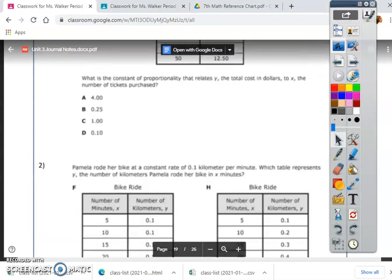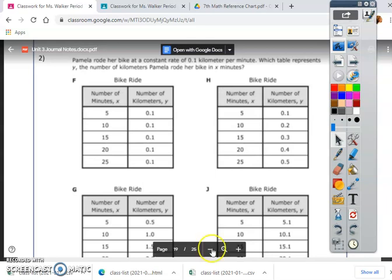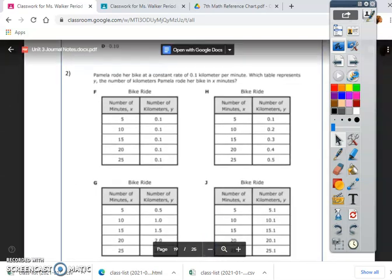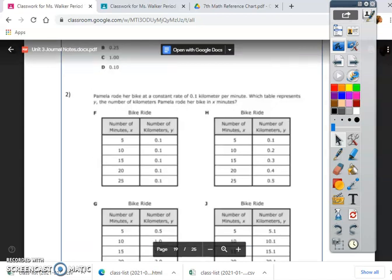The next one is number 2. And I'm going to have to decrease the size of this so you can see it. And it says, Pamela rode her bike at a constant rate of change of 0.1 kilometers per minute. That's the constant rate of change. Which table represents y, the number of kilometers, Pamela rode her bike in x minutes? So, notice x and y. We're not trying to figure out the table. We're trying to figure out which one of these tables is right and goes with our constant rate of change. We have a constant rate of change of 0.1.